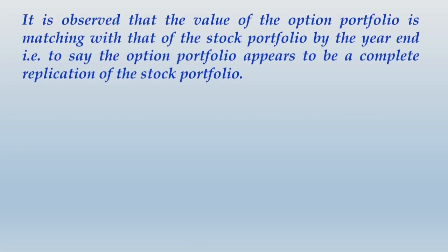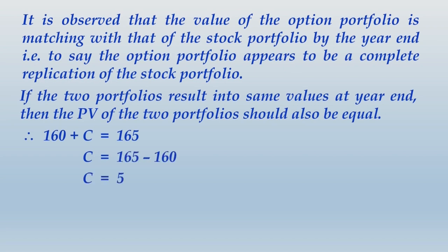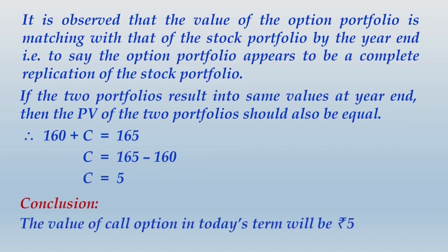It is observed that the value of the option portfolio is matching with that of the stock portfolio by year end — that is to say, the option portfolio appears to be a complete replication of the stock portfolio. If the two portfolios result in the same values at year end, then the present value of the two portfolios should also be equal. So: 160 plus c equals 165, therefore c equals 165 minus 160, which is rupees 5. The value of the call option in today's terms is rupees 5.